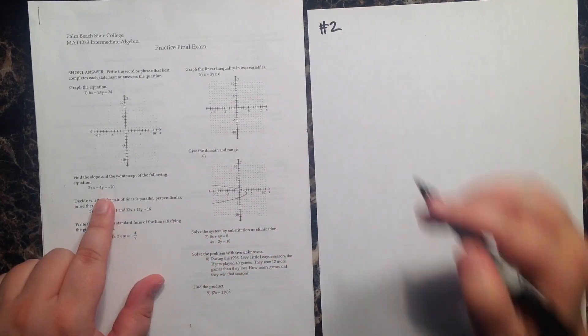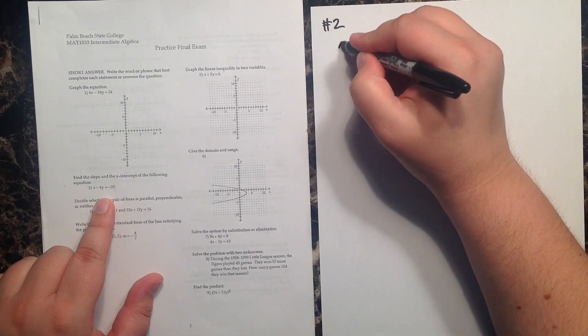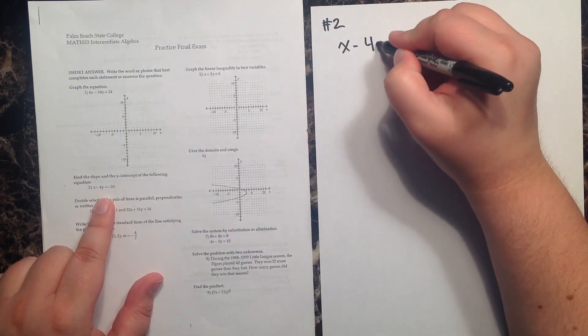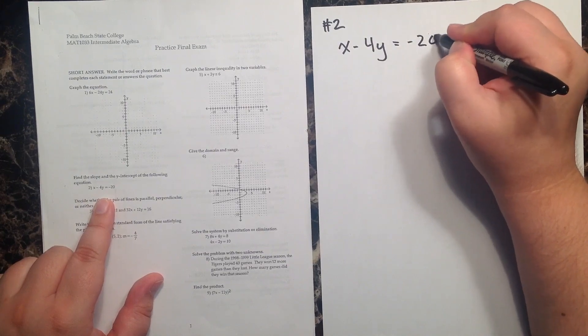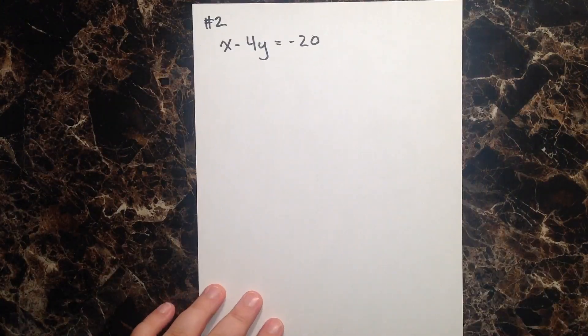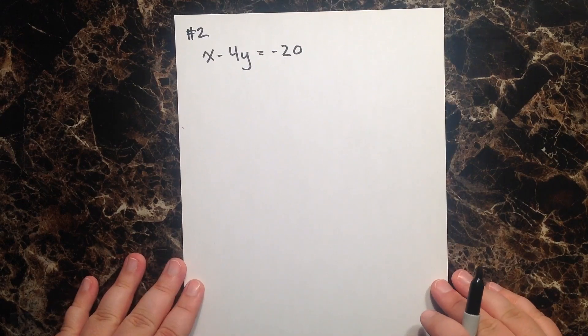Question number two, and the given equation here is x minus 4y equals negative 20. Let's go ahead and put that aside and work on the given equation.